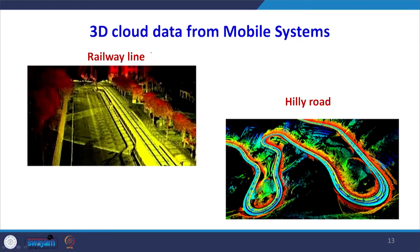Here is an example of data collected for a railway line. The railway tracks are clearly visible, along with vegetation cover, trees, and the railway platform on the sides of the tracks. Maintenance of the railway line can be carried out with the help of such detailed information. Another example is data collected for a hilly road, where a curved road feature is visible, with the central part being the road and other data collected on both sides.